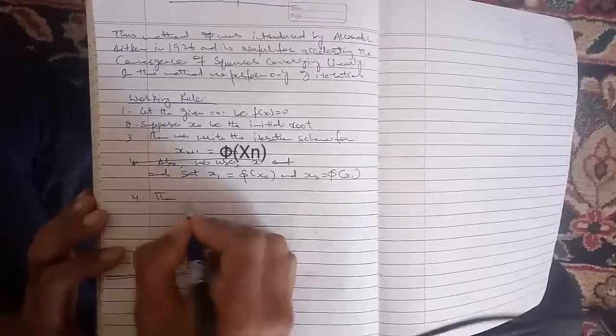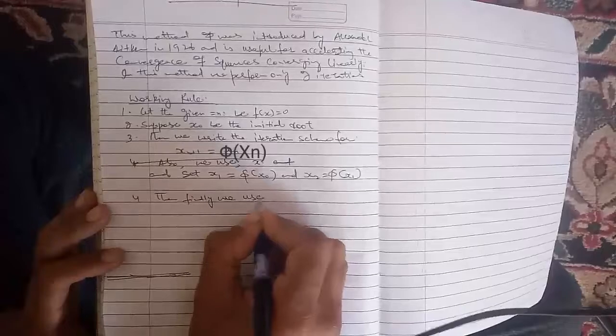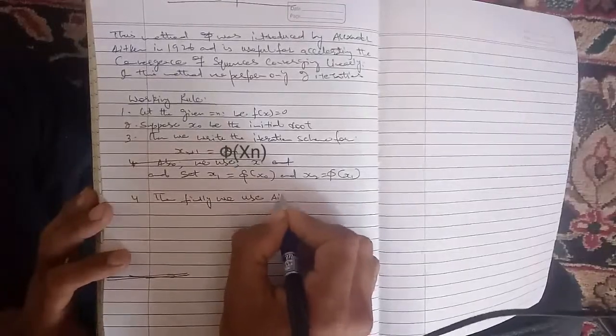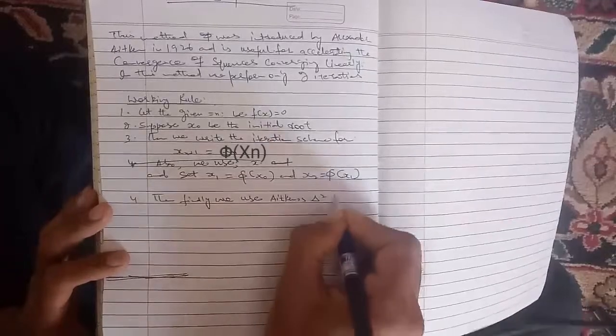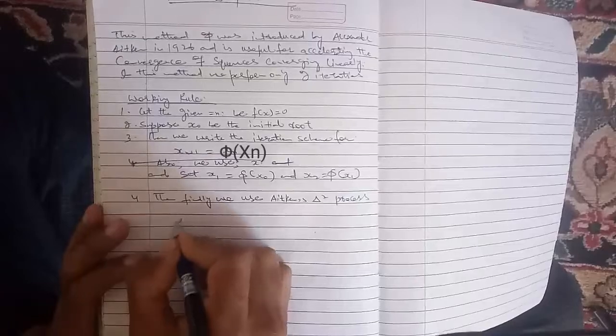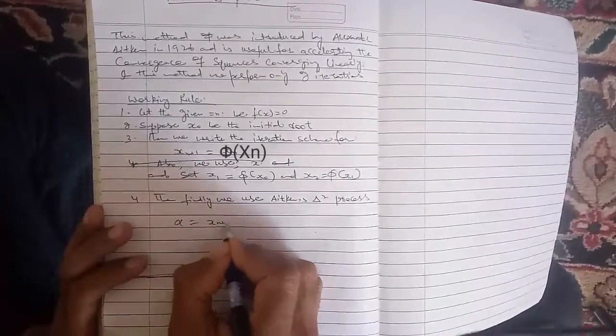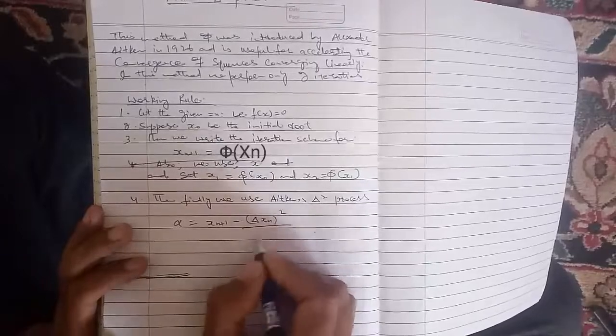Then finally we use Aitken's Delta Square Process, which is: α equals x_n minus (Δx_n)² divided by Δ²x_{n-1}.